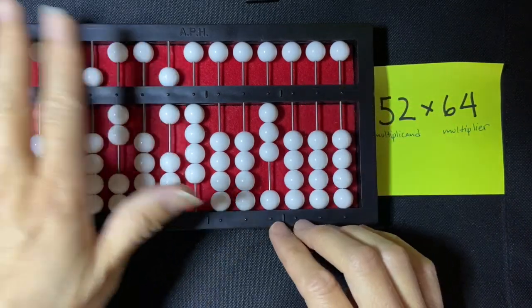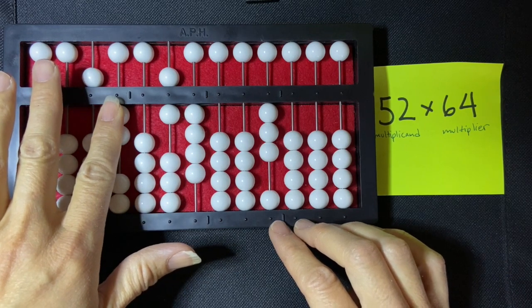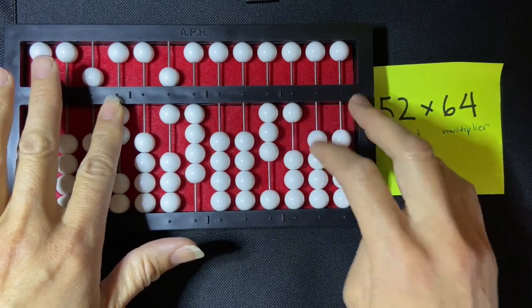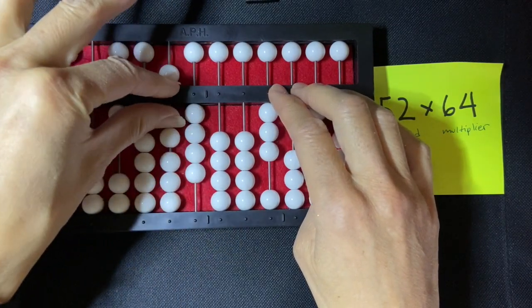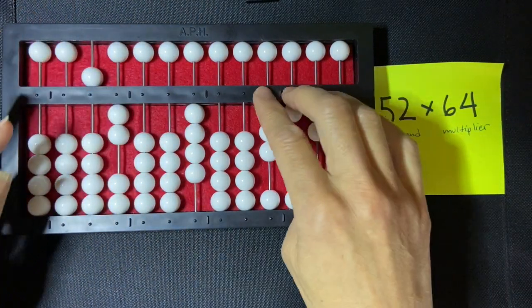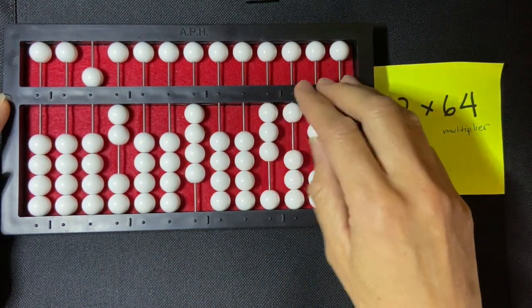Then I say 60 times 2, which gives me 120, and I can set that directly to 120. I'm going to clear the 60 from my multiplier, and then I'm going to read what I have so far, just to keep myself on track here, which is 3,120.